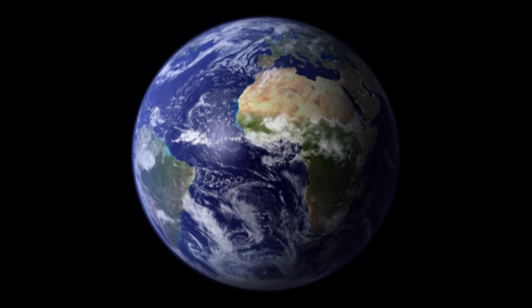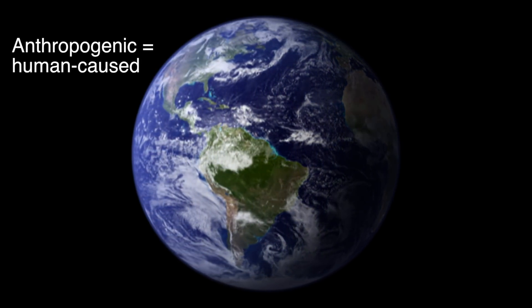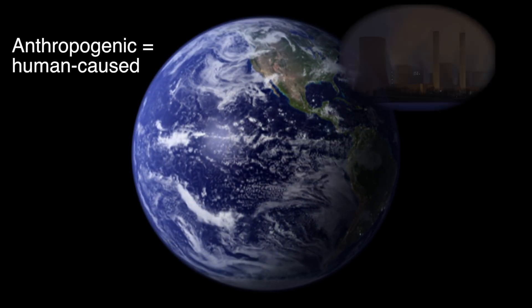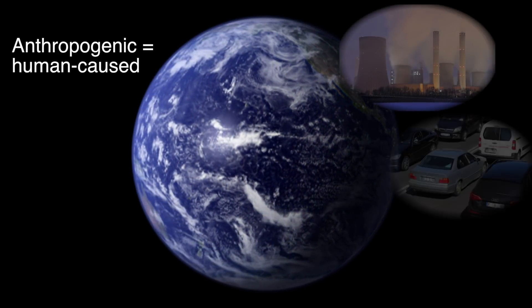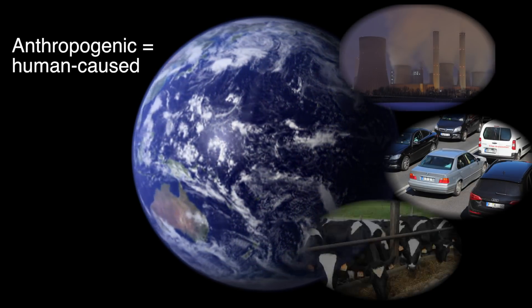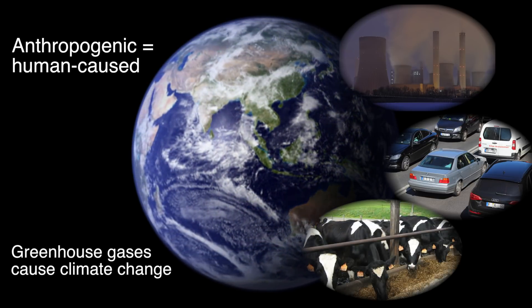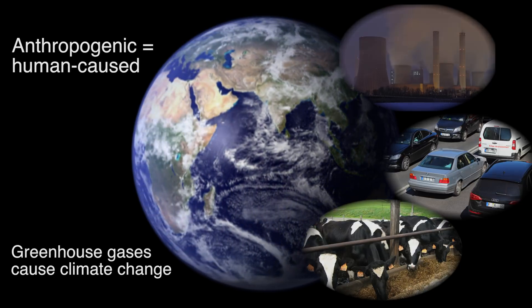You may have heard of anthropogenic, or human-caused climate change. This is when the actions of humans, such as producing electricity from coal or natural gas, driving cars, and even farming, release greenhouse gases into the air. These greenhouse gases make the Earth absorb more energy, and this makes the Earth warmer.